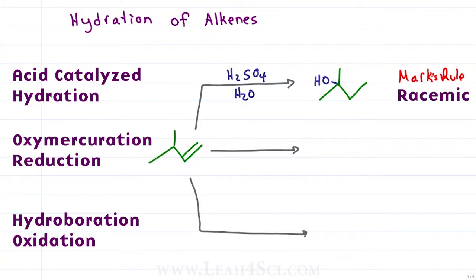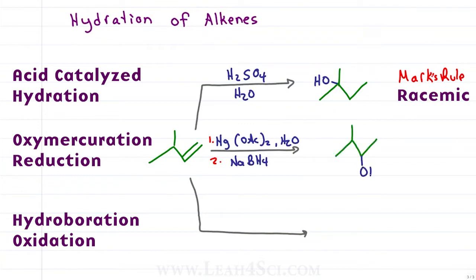For oxymercuration-reduction, we have a mercury catalyst in the first step that acts as a carbocation babysitter, and therefore the hydroxide will add to the more substituted carbon without the potential for a carbocation rearrangement. This reaction follows anti-addition.